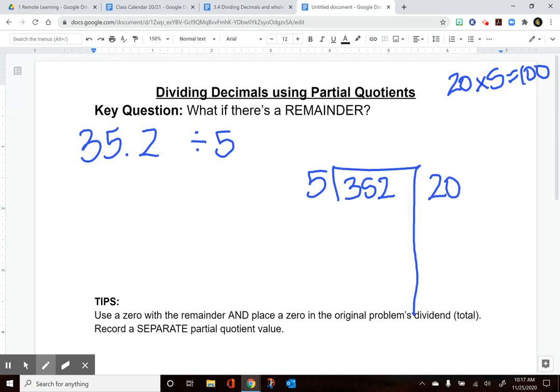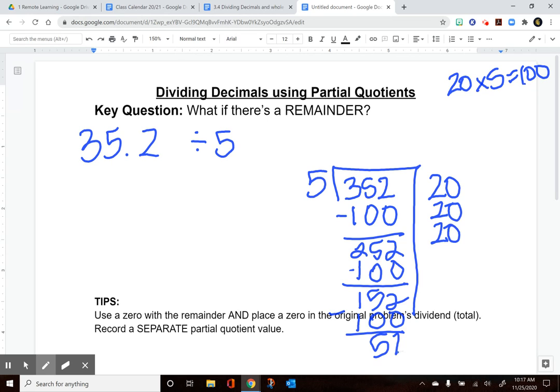I can also take another bundle of twenty making this 100 smaller. I can do another bundle of twenty making this 100 smaller. I know I can do a group of ten—ten groups of five is fifty. I can't take a full group of five from two which means that's my remainder.